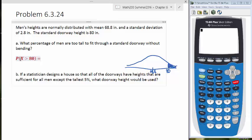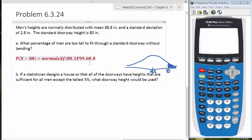So this is going to be a normal CDF problem. And remember the normal CDF takes a low, high, the mean, and standard deviation. So the low is going to be 80. Our maximum or our high number is infinity, so we'll represent that with 1e99. Our mean is 68.8, and our standard deviation is 2.8. So here's our complete calculator command.